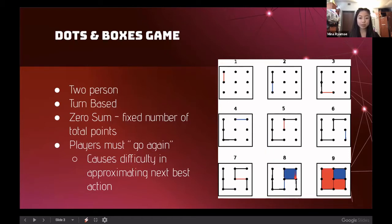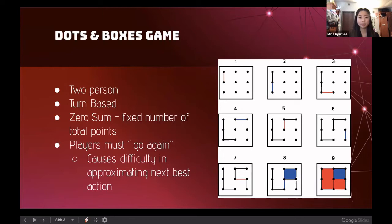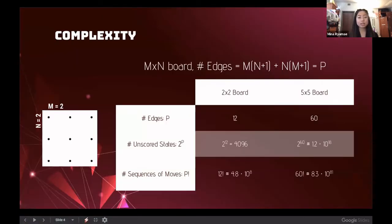There is also a go-again factor in Dots and Boxes. When the blue player places the fourth edge and takes a box, they are then forced to place another edge. This go-again factor causes a lot of difficulty when trying to approximate what the next best action is in terms of optimal play, and contributes to why the game is computationally complex with a lot of strategy involved.